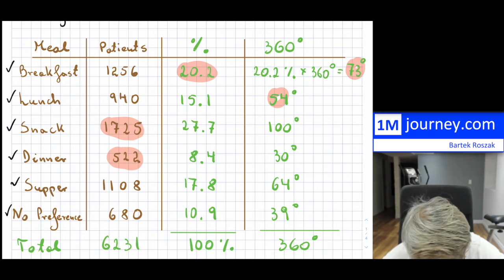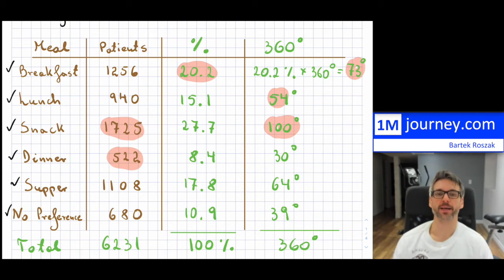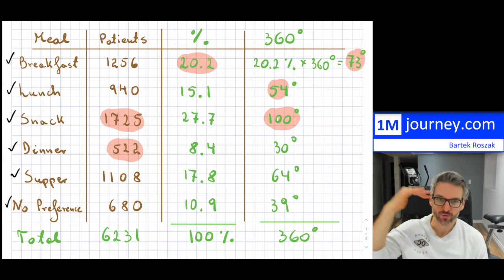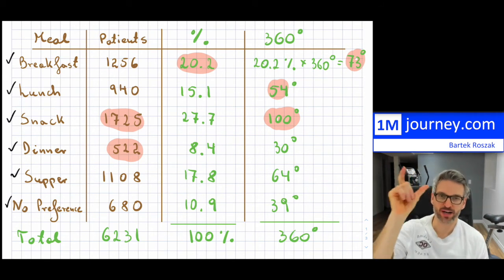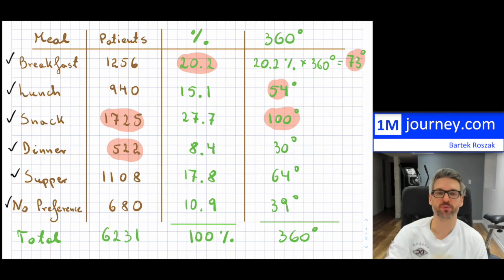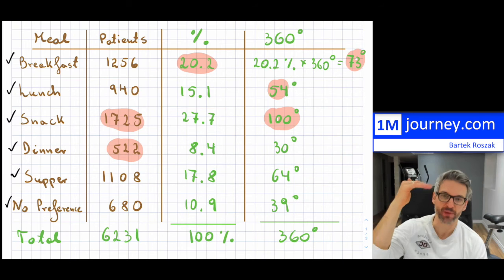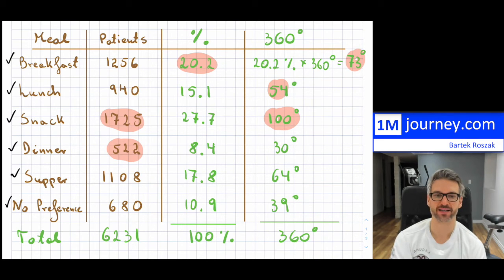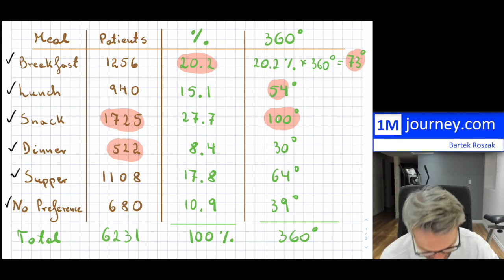Now we have all the data — the degrees and the percentages — and we have to place them into the pie chart. You can start with breakfast and go in order, or you can reorder from largest to smallest, which is typical. My largest is snack, then breakfast, then supper. I'll do it in that order.